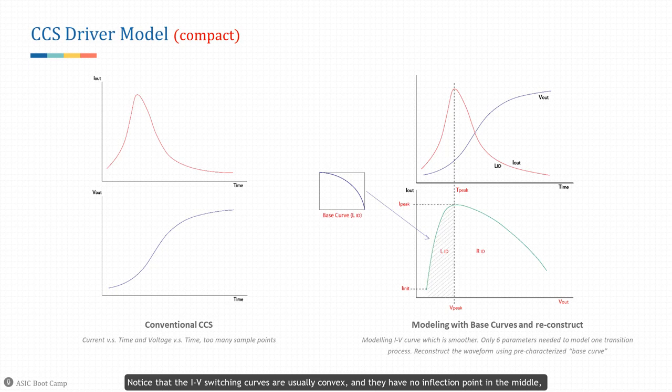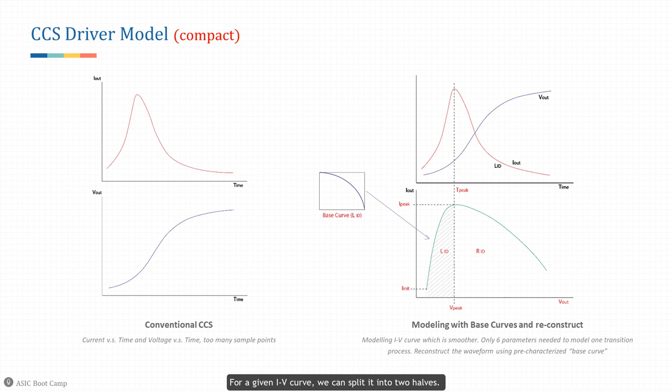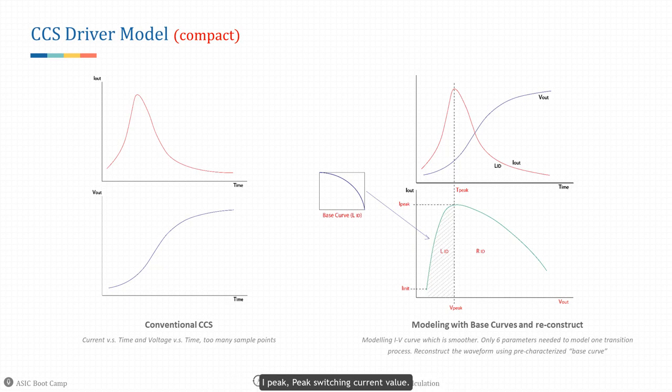The CCS model is characterized in the IT domain (current vs. time), but we can also characterize the transition process in the IV domain (current vs. voltage). Rather than using timestamp-based current and voltage curves, Compact CCS models current vs. voltage curves. The benefit of characterizing in the IV domain is that the transition curve is much smoother than in the IT or VT domain, so we can reconstruct the curve more easily and reduce storage space. The IV switching curves are usually convex with no inflection point, facilitating compact modeling.